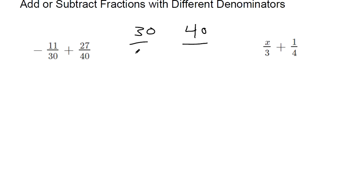30 plus 30 makes 60, plus another 30 makes 90, plus another 30 makes 120, and 150. You can keep going. We've got 40 plus 40 makes 80, plus another 40. There's our common denominators.